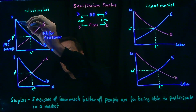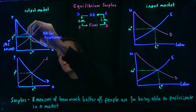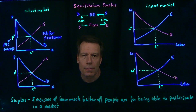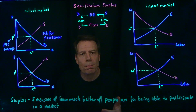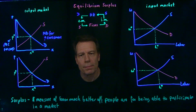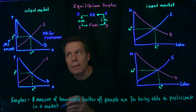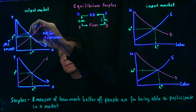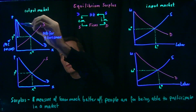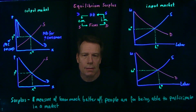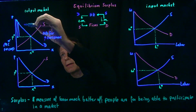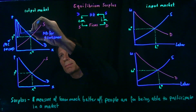They would have been willing to pay this much, but they only had to pay this much — that's a dollar measure of how much better off that consumer is for having been able to purchase that good. There's another consumer willing to pay just a little bit less, but they only have to pay the price, so their surplus is that vertical distance. And another consumer who has this surplus, and so on and so forth.